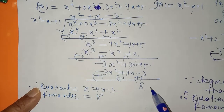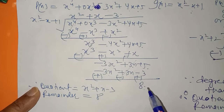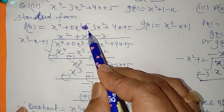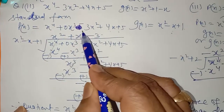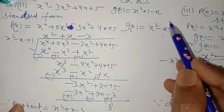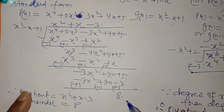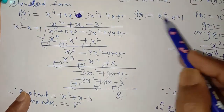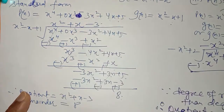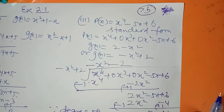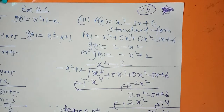If the remainder had come zero, then we would say that the divisor is a factor of the dividend. You know what a factor is — you have done it in Class 9th. If the remainder is zero, then we say that this divisor is a factor of the dividend. So the quotient is found, and simple polynomial division is done.